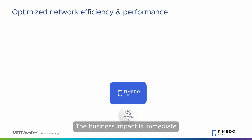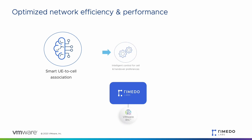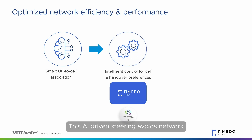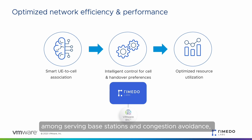The business impact is immediate. Using Remedo's X-App, CSPs can efficiently steer UEs to base stations following currently valid policies. This AI-driven steering avoids network congestion through intelligent load balancing. With this rational distribution of UEs among serving base stations and congestion avoidance, the X-App guarantees efficient resource utilization.